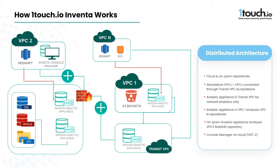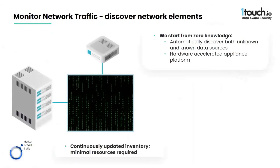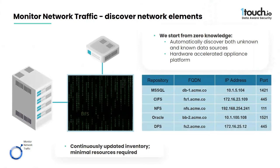Inventa does not deploy agents. The first part of the ongoing process is to take a passive copy of available network traffic. This can be done using a network span or tap, or smart sniffing technology such as Gigamon or Ixia. Many organizations have this capability in place to support existing security and network operations tools. Complete network coverage is not required, but covered network segments will provide better visibility. From the network traffic, we build a list of candidate repositories for scheduled periodic scanning.